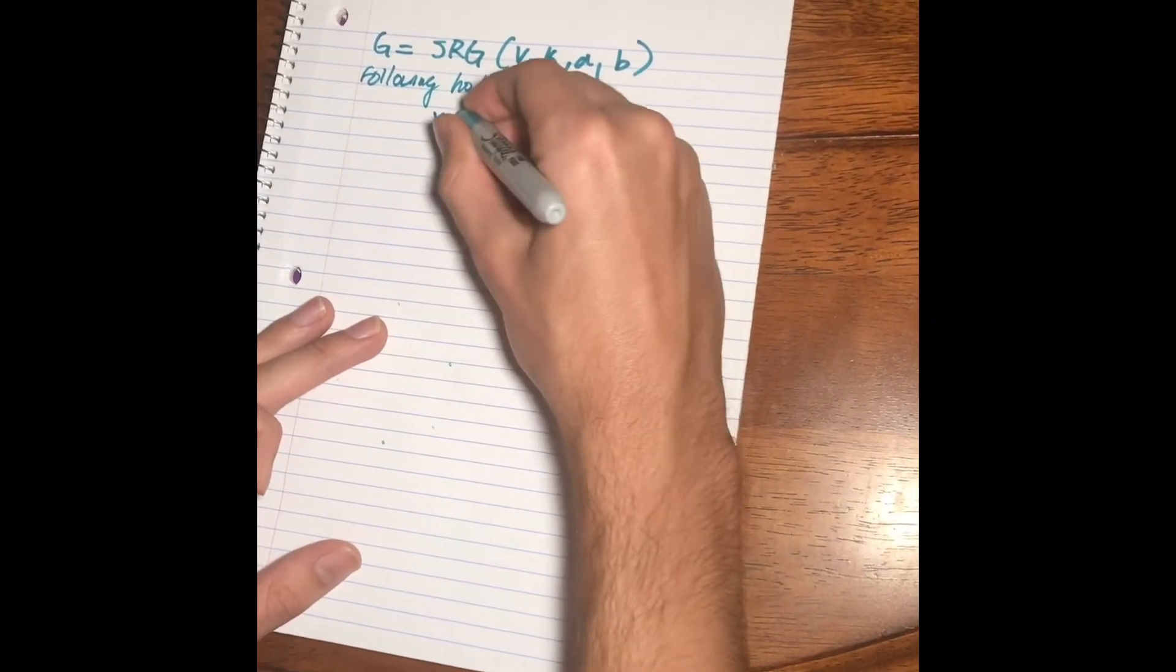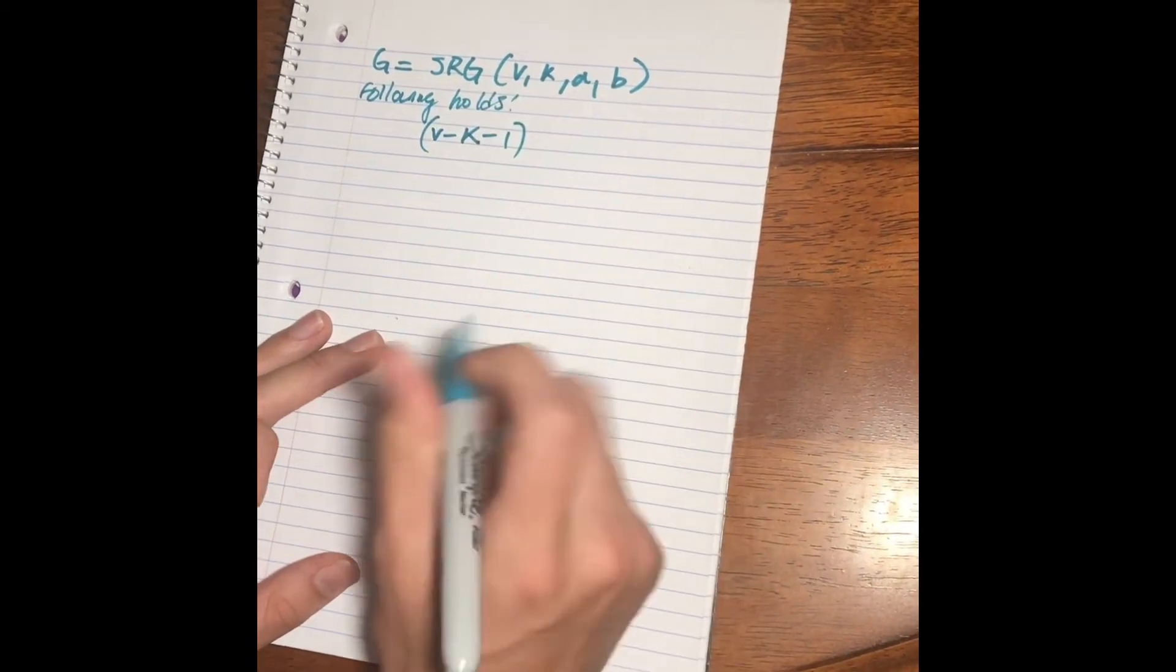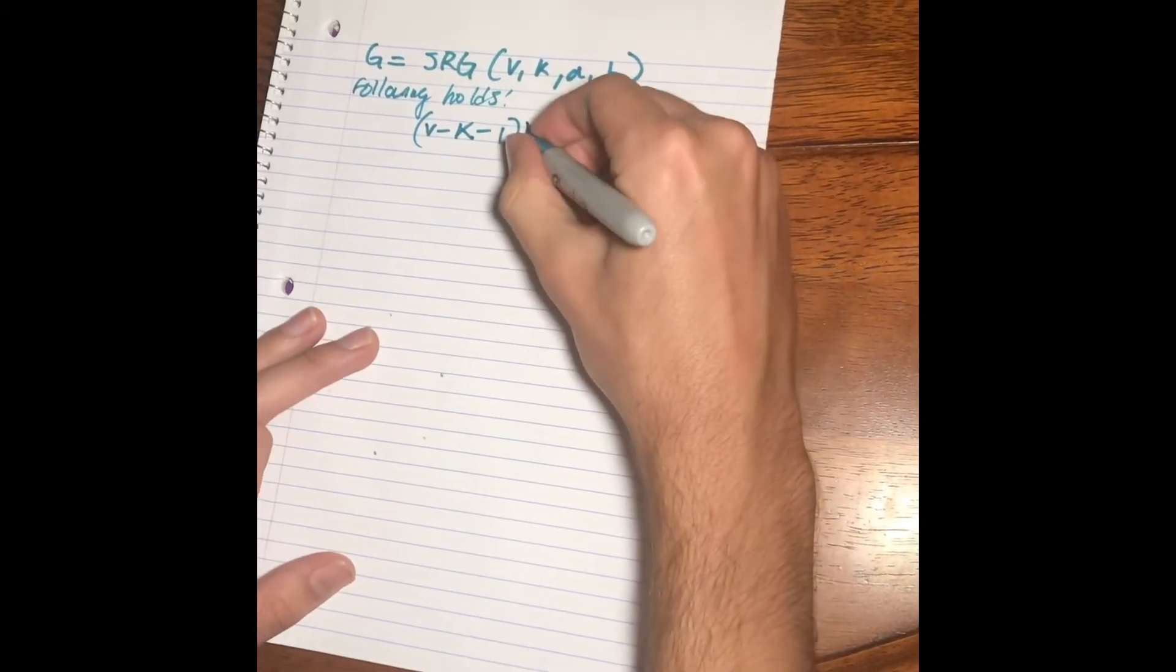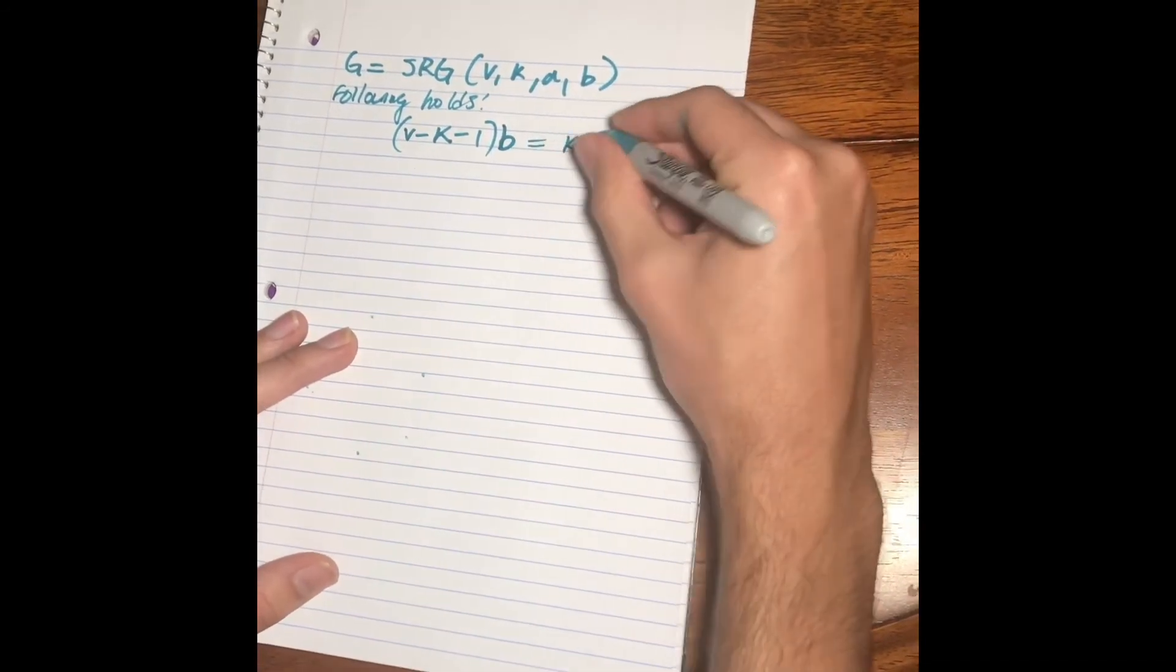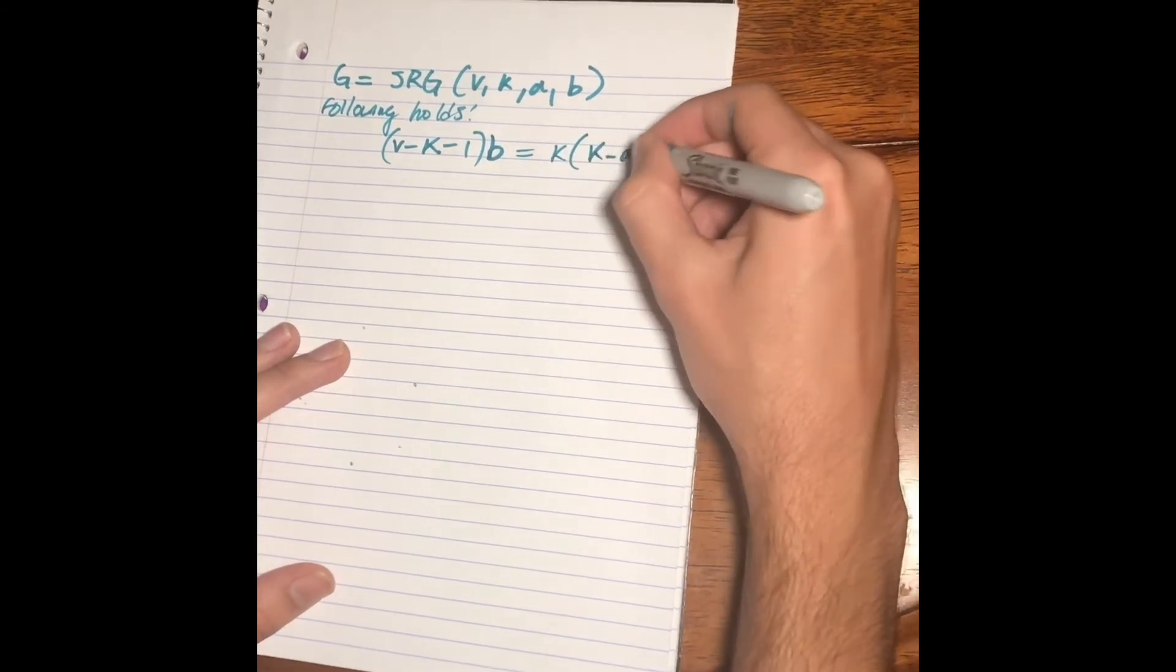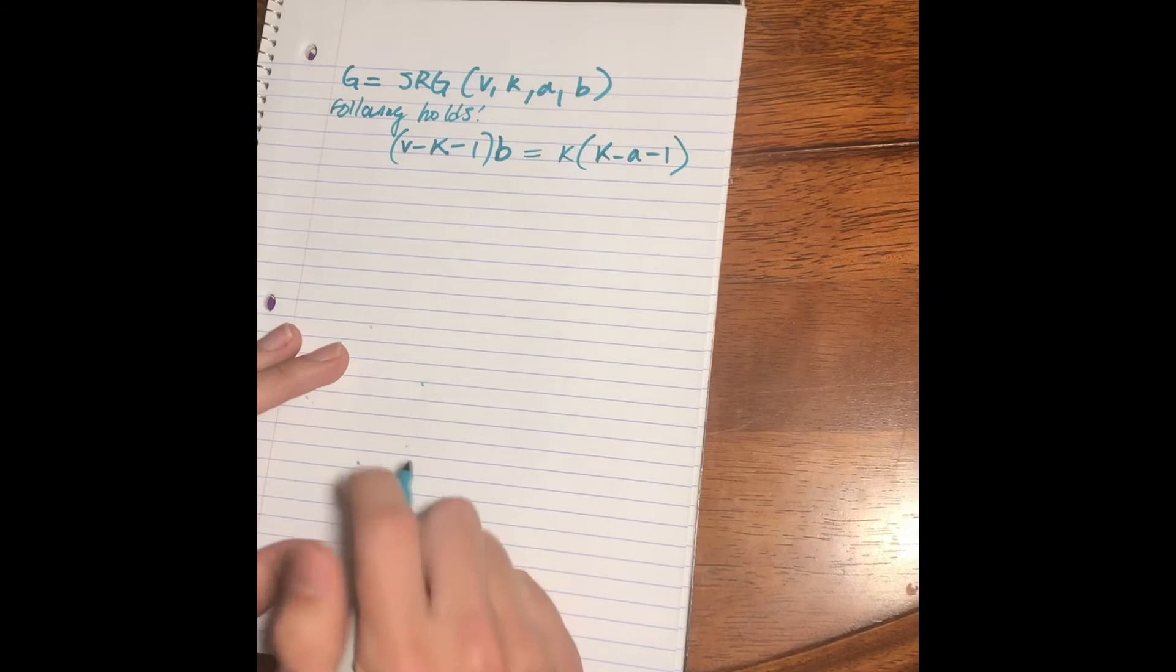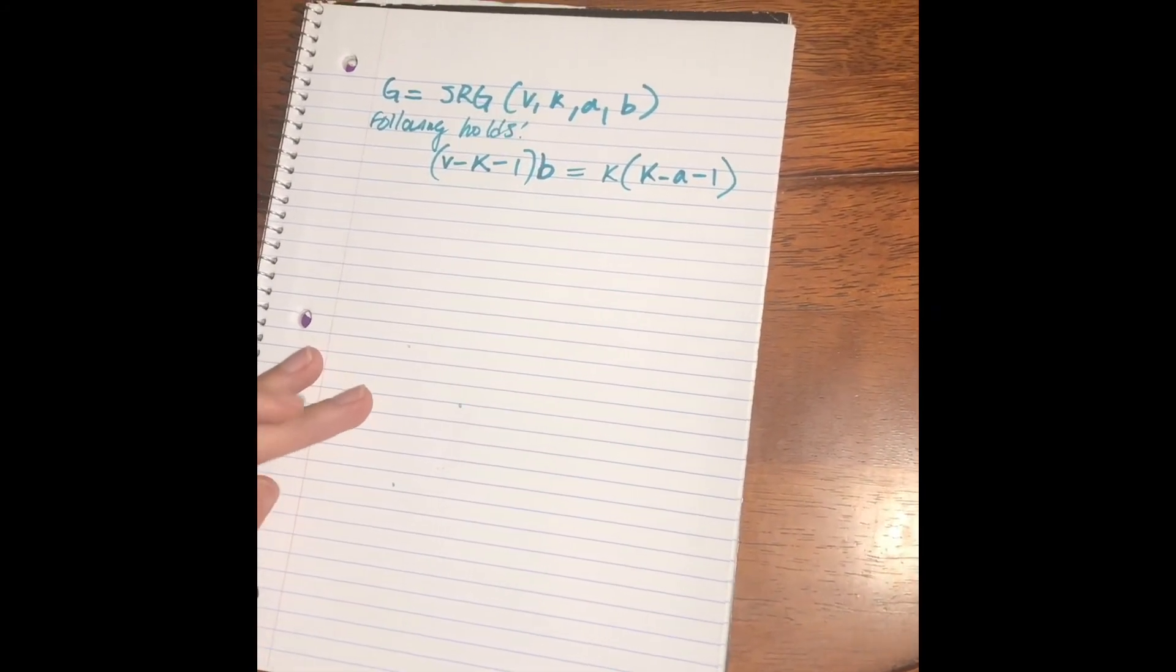It has the following relationship. You take the number of vertices minus the k regularity minus 1 times B, that second integer, it's going to be equal to k times k minus a minus 1. And this basically results from a simple counting argument.